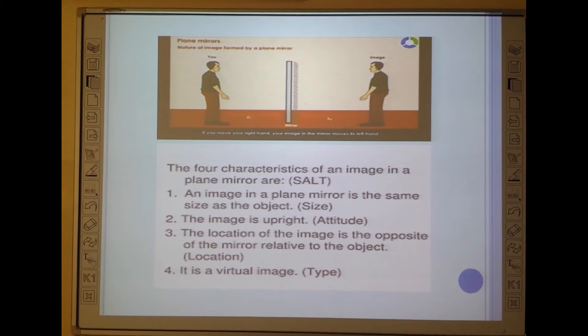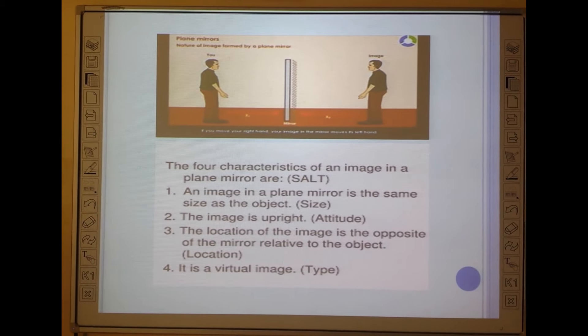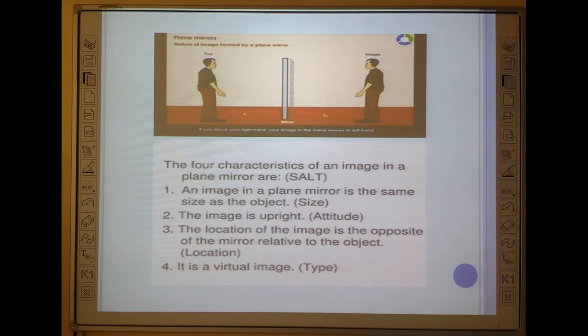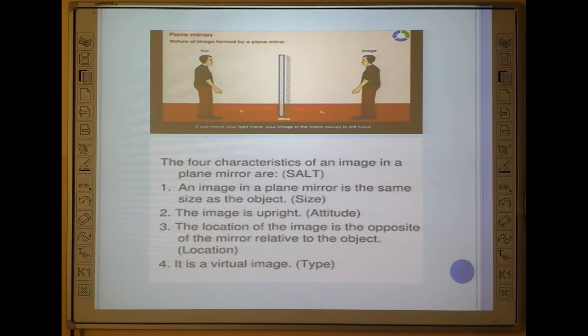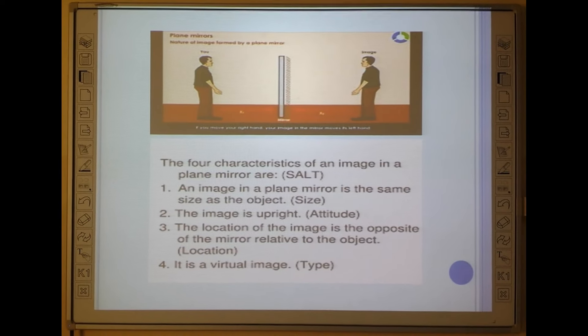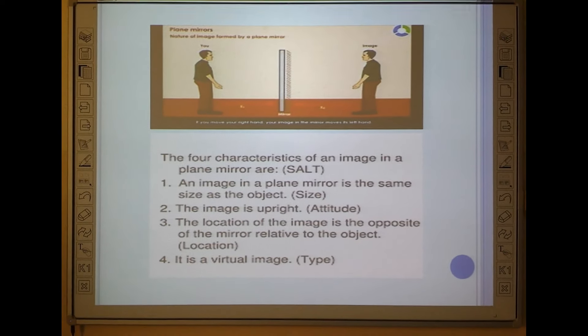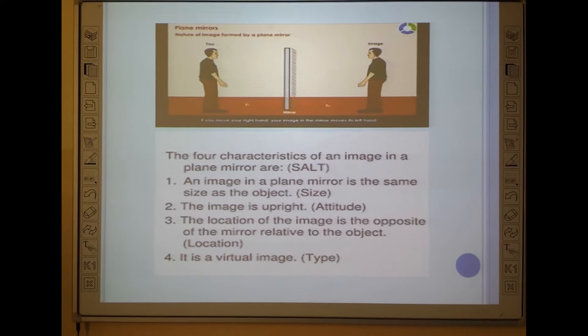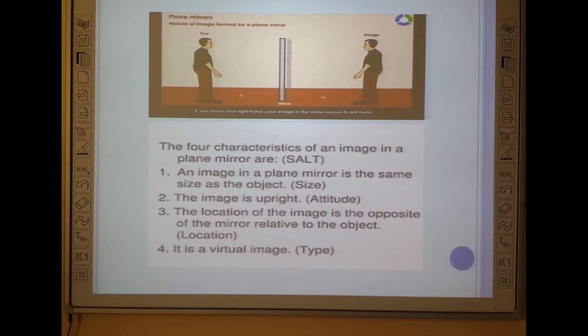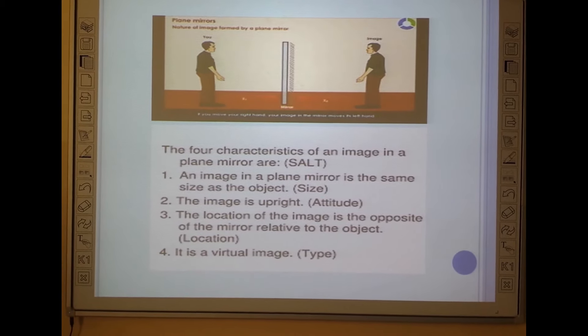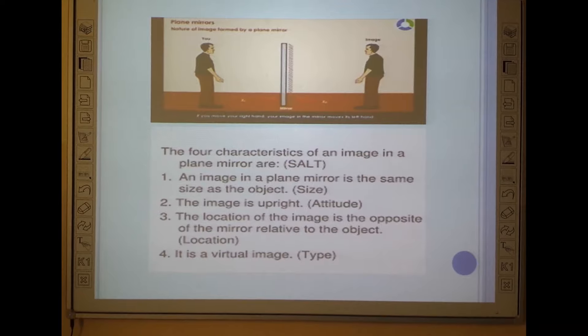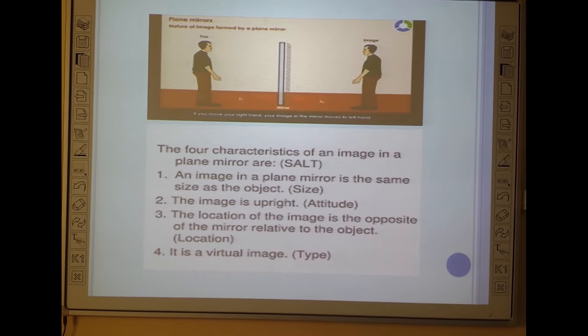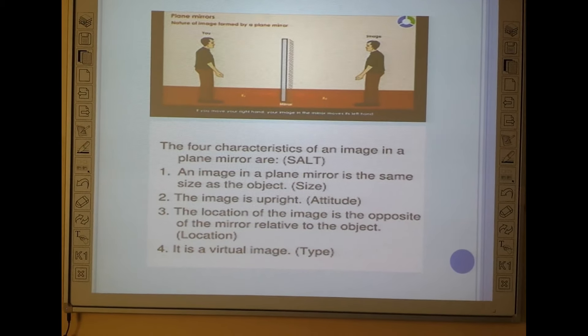You can better understand reflection through the four basic characteristics of a plane mirror. What happens when we observe an image in the plane mirror? Number one, an image in a plane mirror is the same size as the object. The image is upright. The location of the image is the opposite of the mirror relative to the object, and it is a virtual image. The same features we will observe in case of reflection.